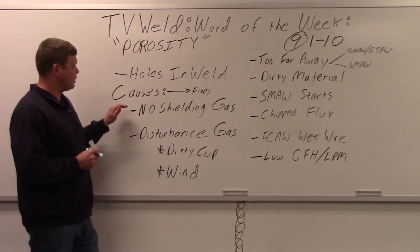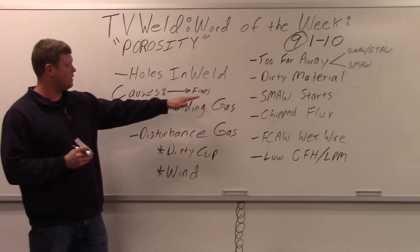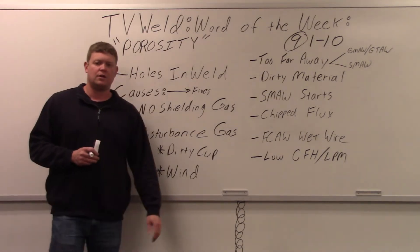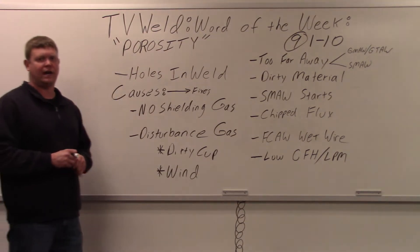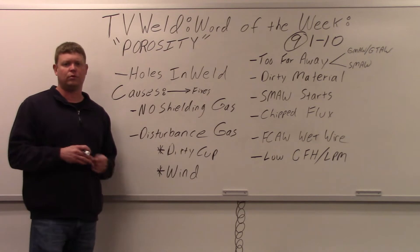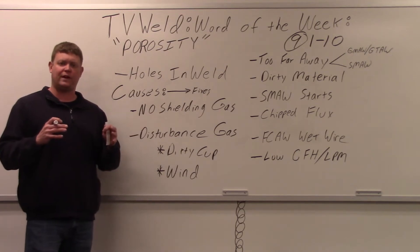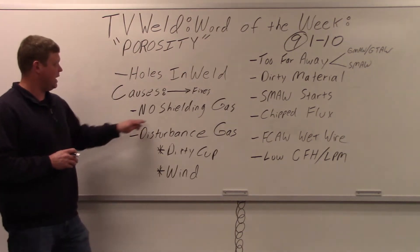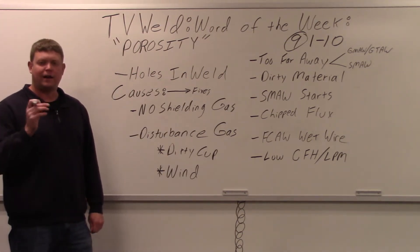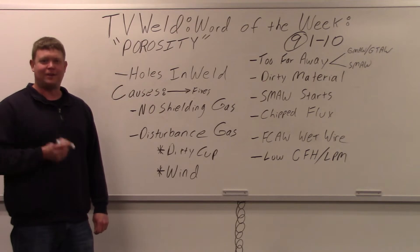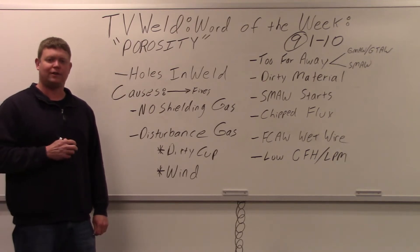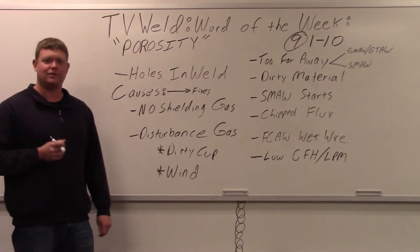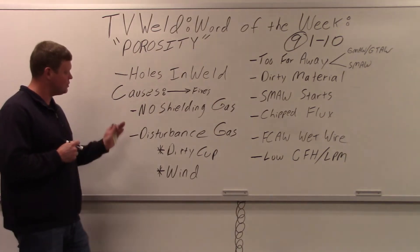We'll go over the causes of porosity and then the fixes. Starting with no shielding gas: with MIG and TIG, you have argon or CO2 coming out of a cup that prevents atmospheric contamination. If you have no shielding gas, the fix is simple — just turn the bottle on. People come up to me all the time saying they don't know what's wrong, and clearly the shielding gas just isn't on.